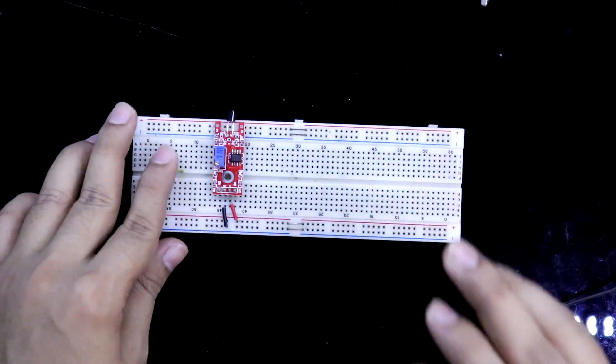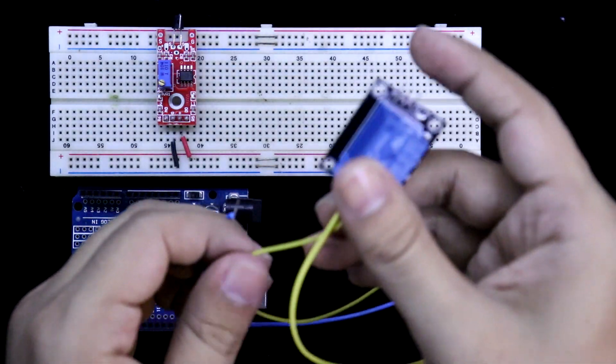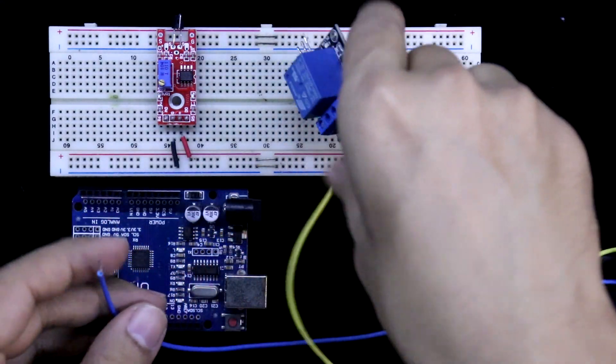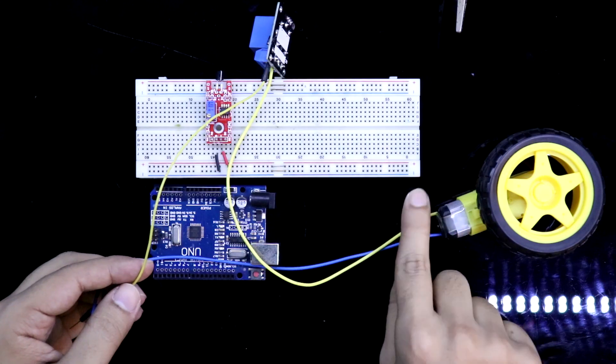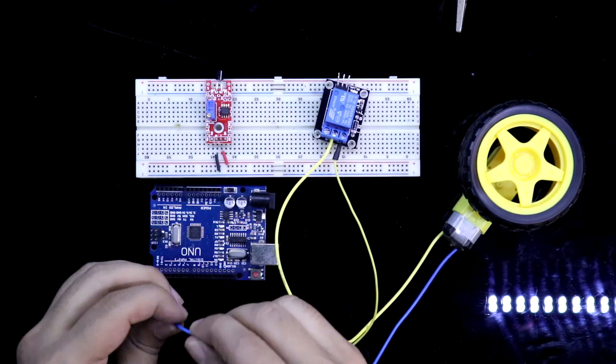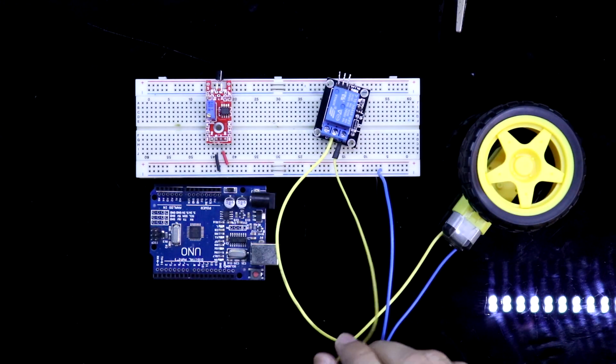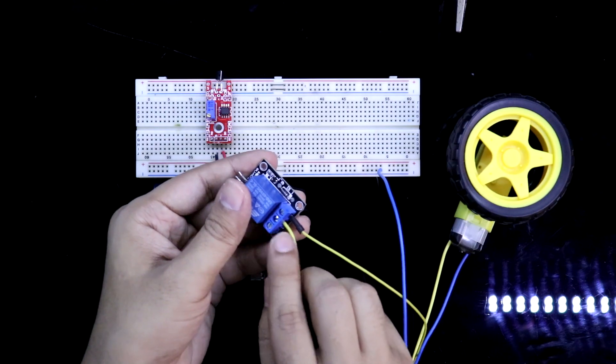Now we will do the Arduino connection. Connect your motor like this with a relay. There are two wires from the motor. One will be directly connected to the negative and the other pin from the motor is connected to the common pin of the relay.